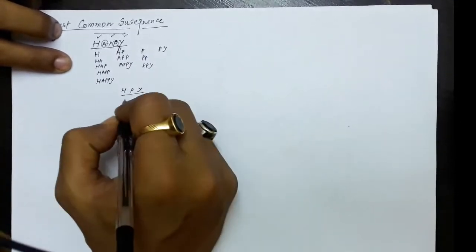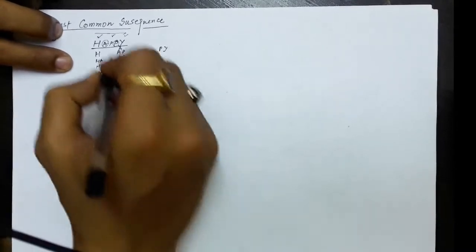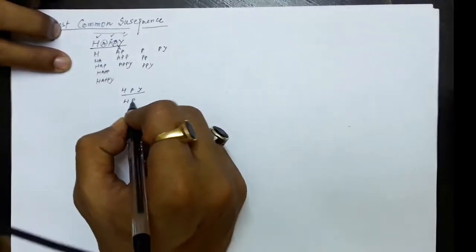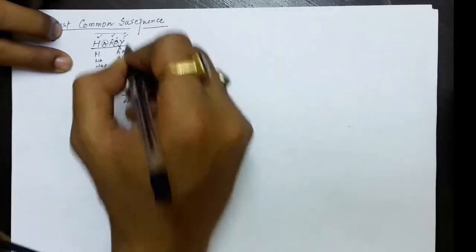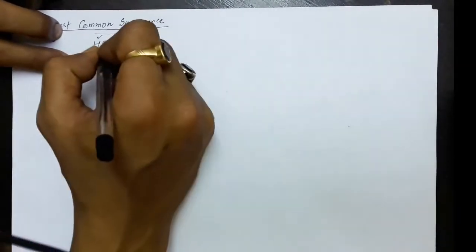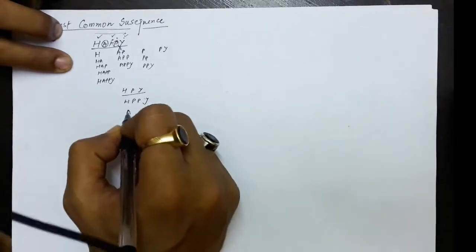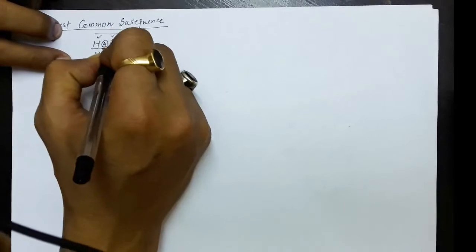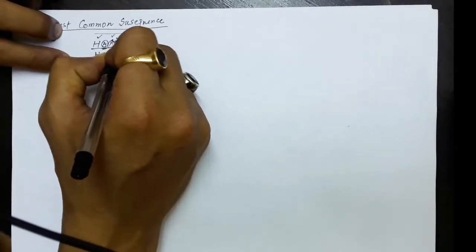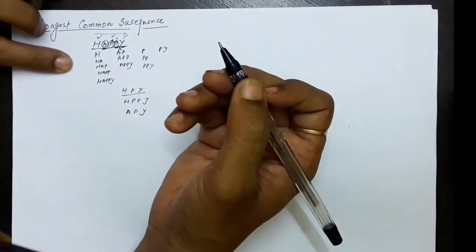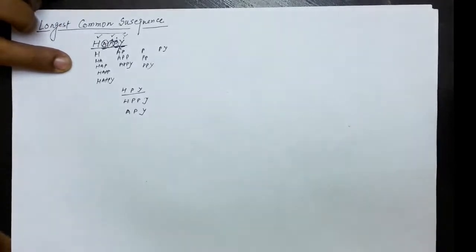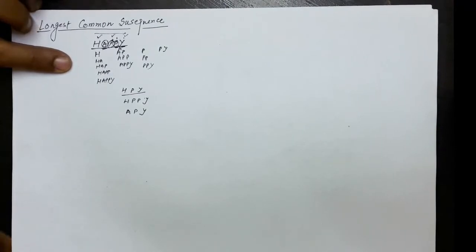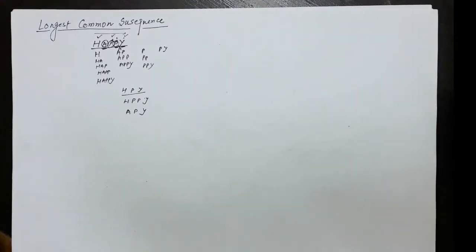For example, I start with h, then I take this p and this p — h, p, p — and then I take y. So in between I have left out the 'a'. Similarly I can start with a, then p, then y. So this is a subsequence. Now if I have been given two strings and I have to find out the longest common subsequence of both strings, let us see how we can find those.